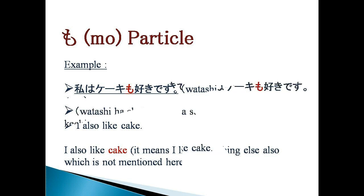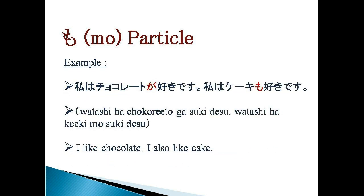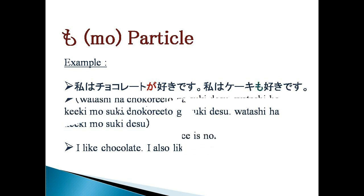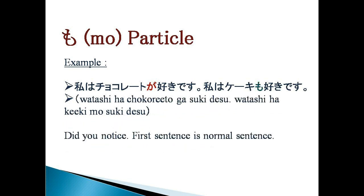Let's understand this with another example. WATASHIWA CHOKRETO GA SUKI DESU. WATASHIWA KEKI MO SUKI DESU. This means 'I like chocolate and I also like cake.' In the first sentence, we have used particle GA, meaning 'I like chocolate.' But in addition, I like something else also, and that is cake, so we have used particle MO.